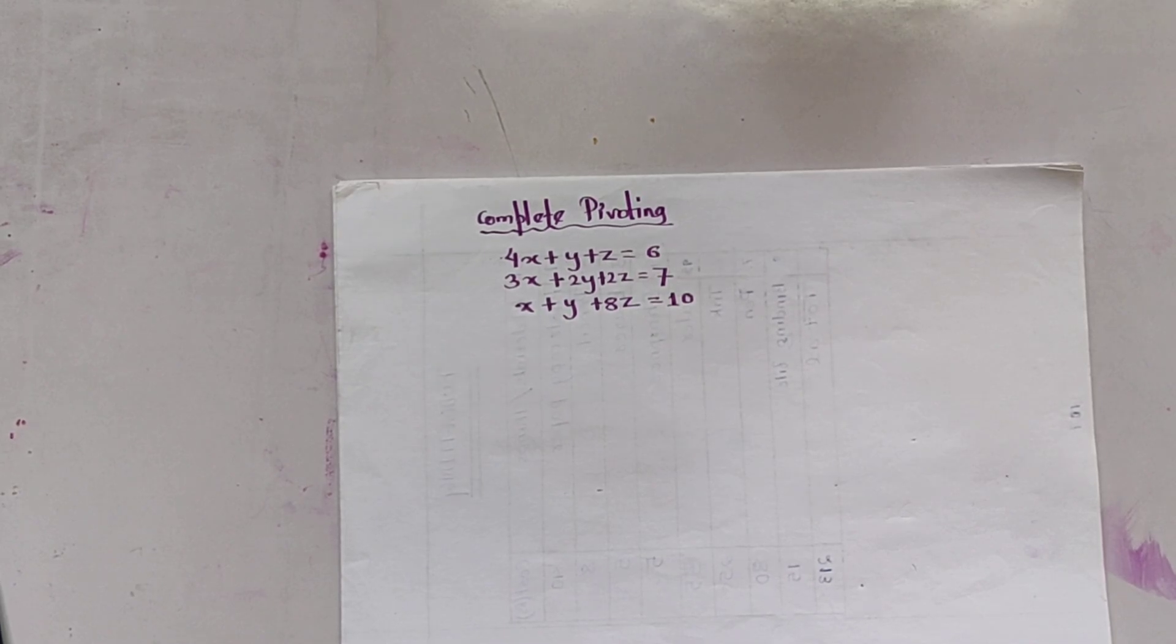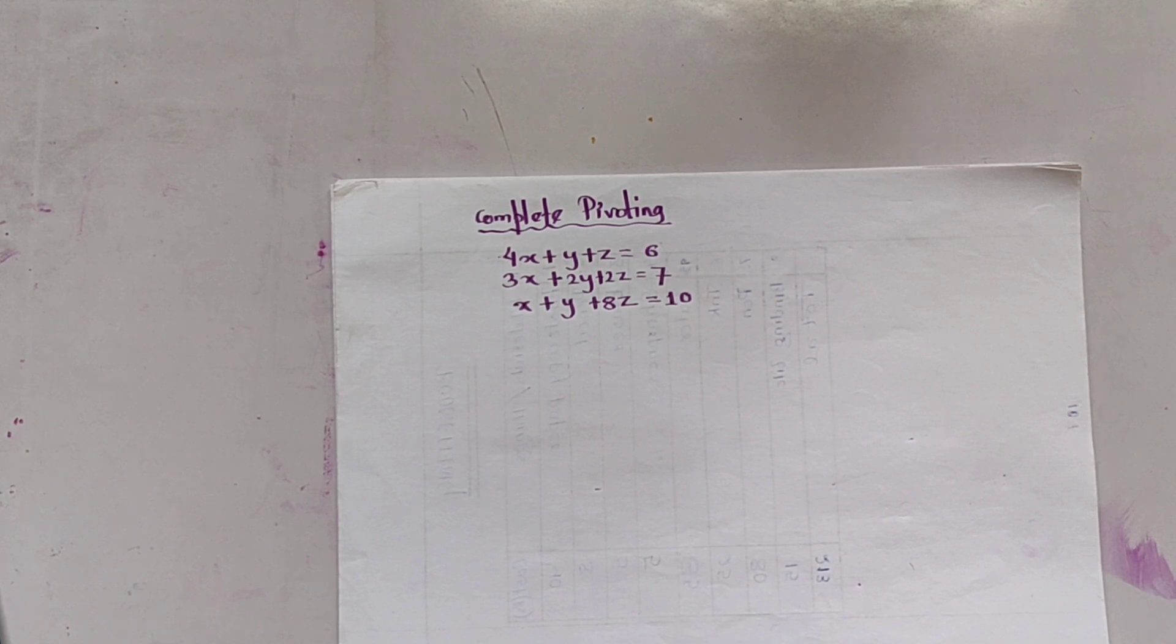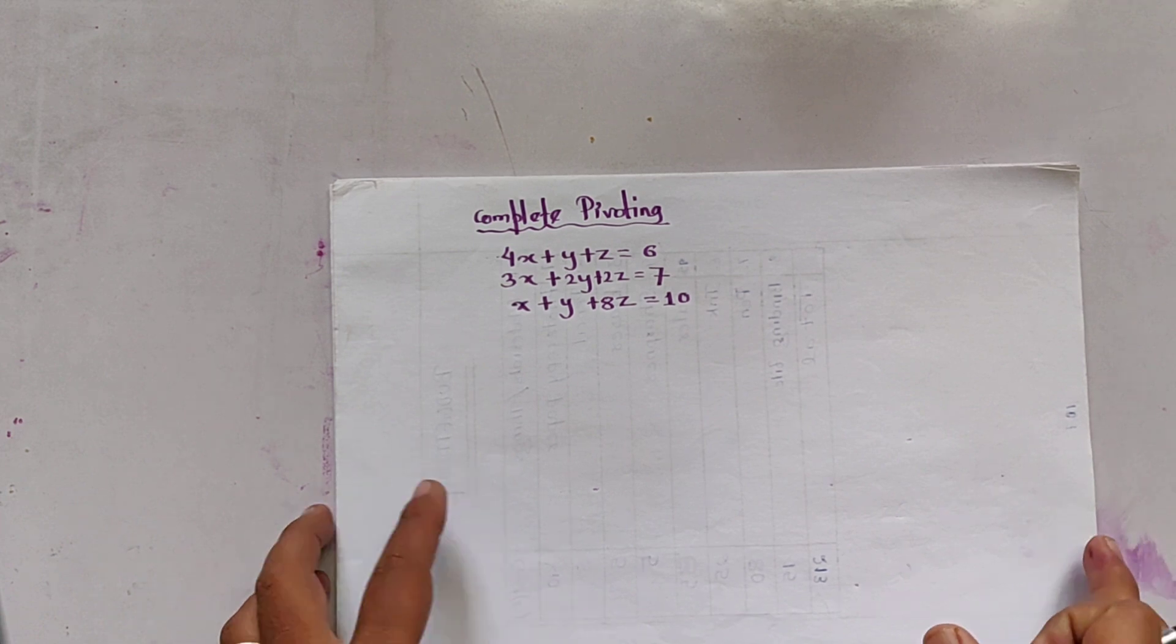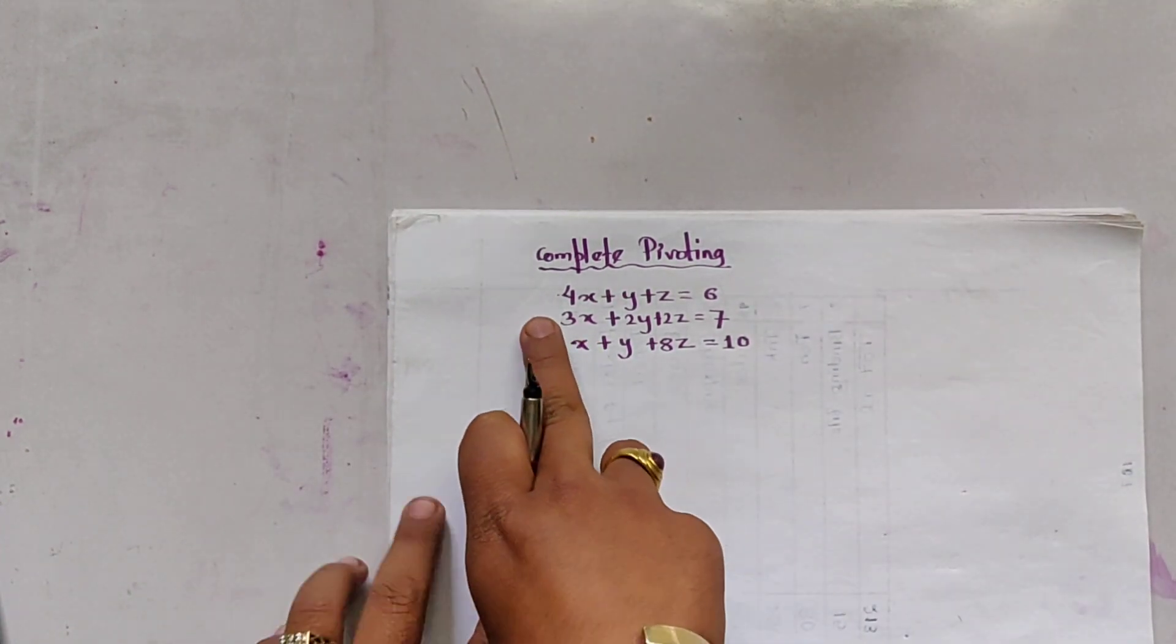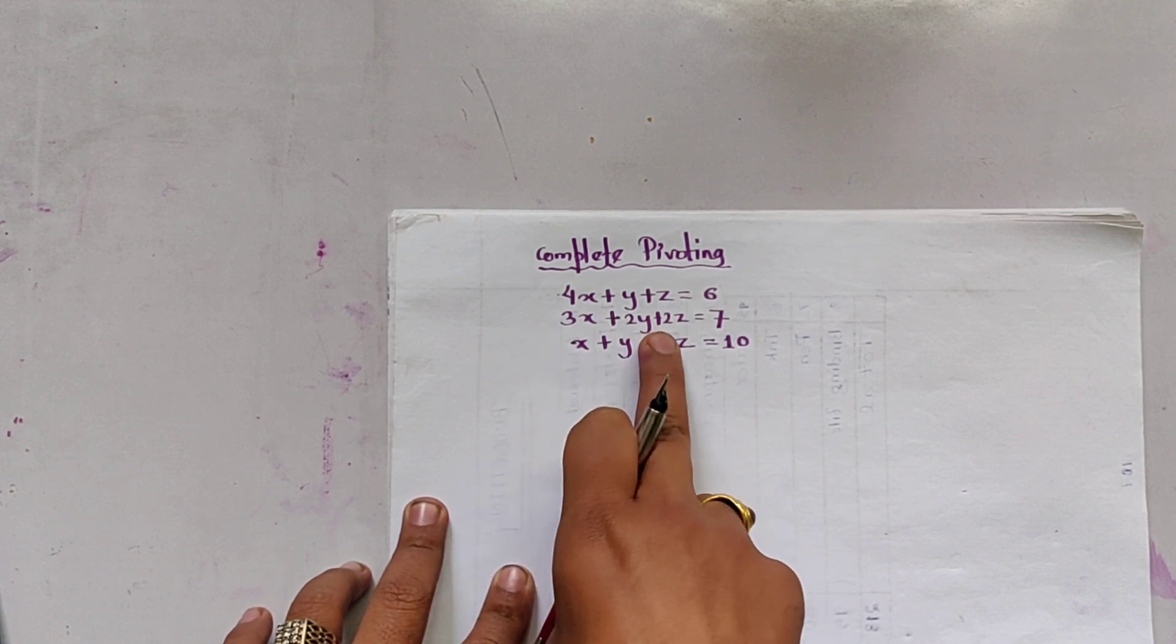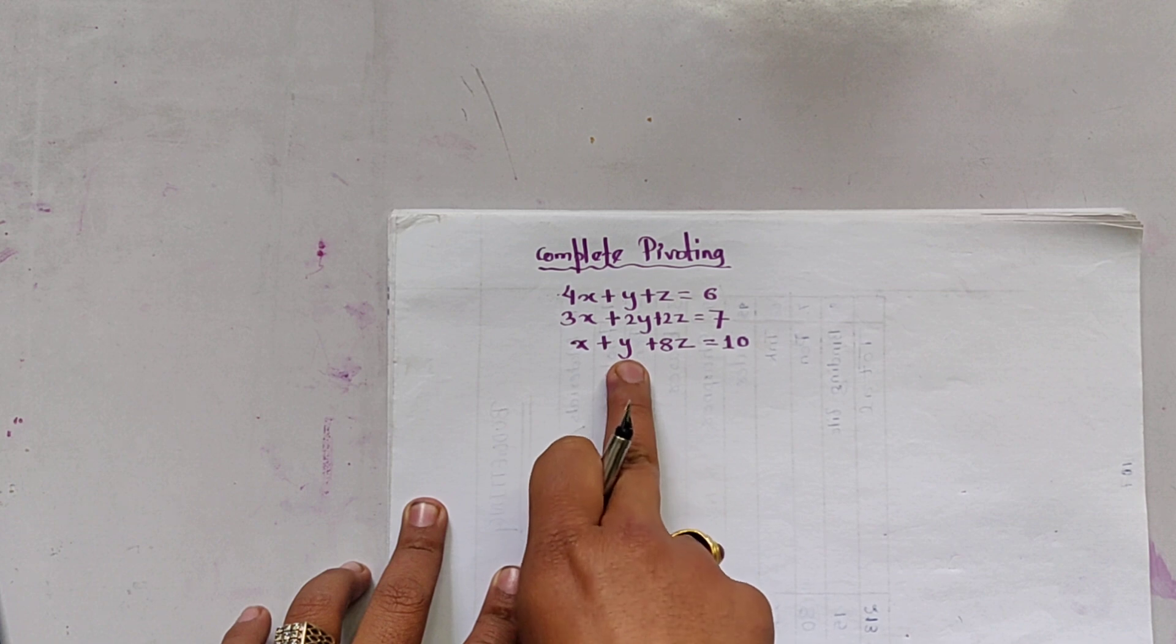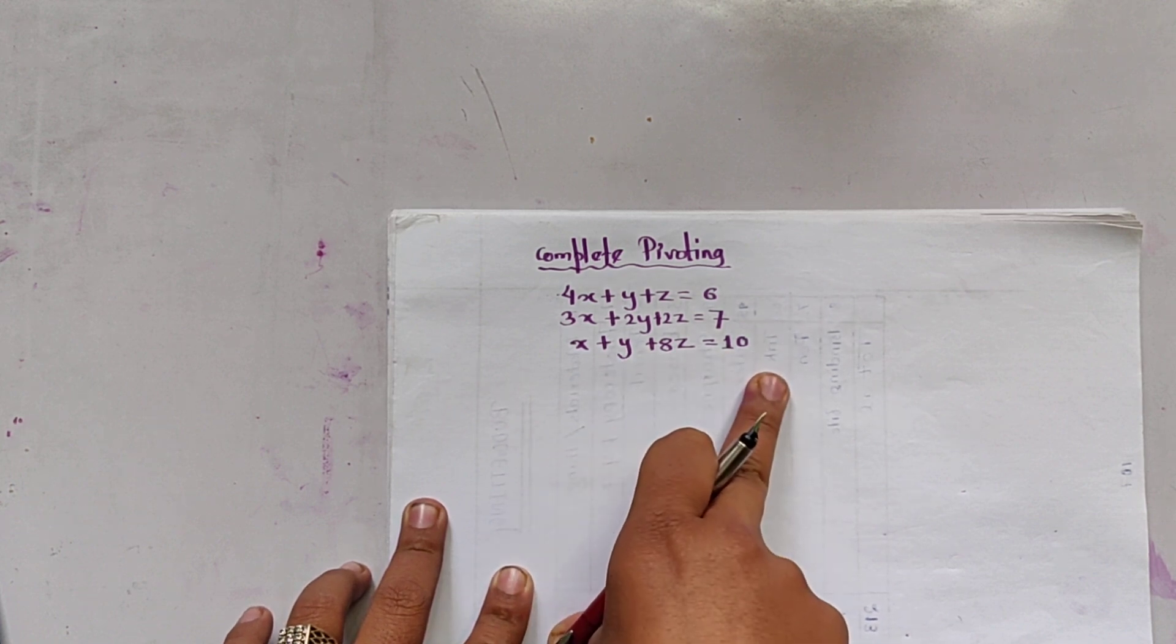Namaste. Today, in this video, we will be discussing the complete pivoting method to solve a given linear equation using Gauss elimination method. Let us consider an example: 4x plus y plus z equals 6, 3x plus 2y plus 2z equals 7, x plus y plus 8z equals 10.